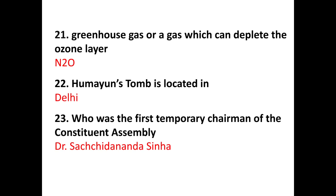The next question is about greenhouse gases and gases that can deplete the ozone layer. Nitrous oxide (N₂O), water vapor, carbon dioxide, and methane are all greenhouse gases that deplete the ozone layer. The ozone layer is in the stratospheric layer of the atmosphere. Its molecular formula is O₃ and it is an allotrope of oxygen.